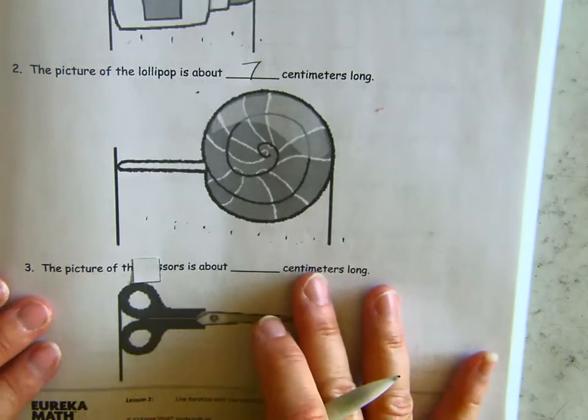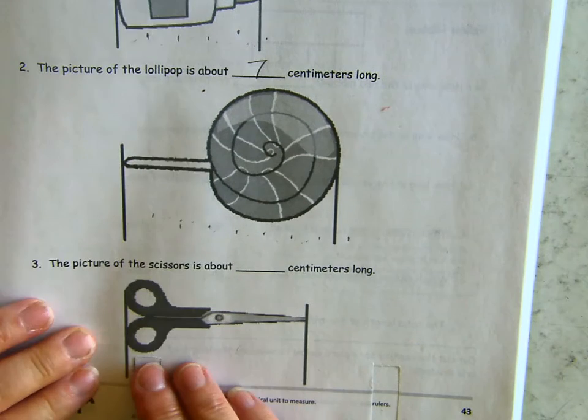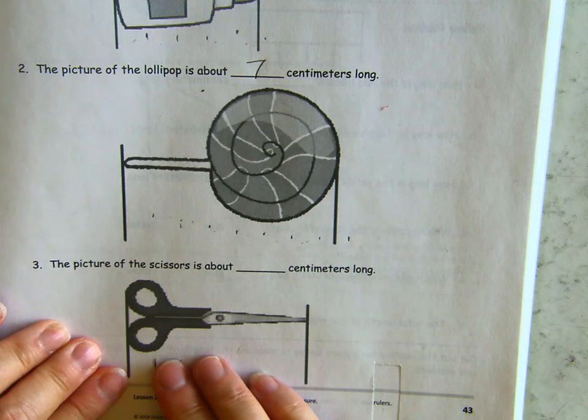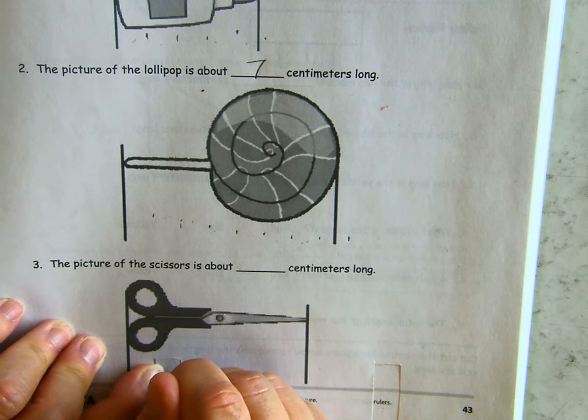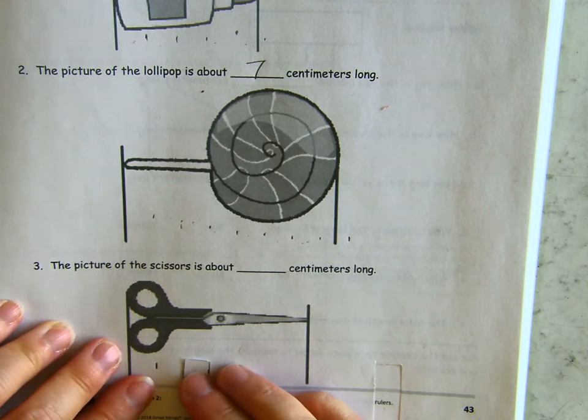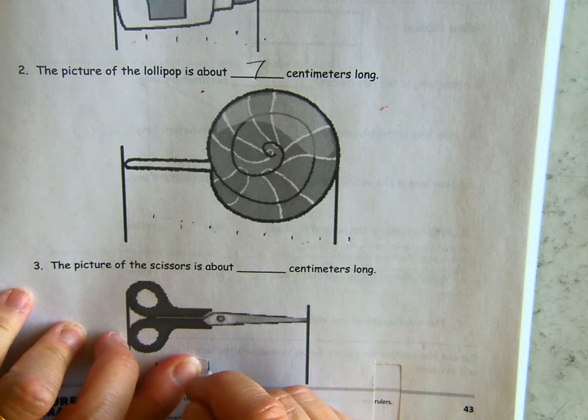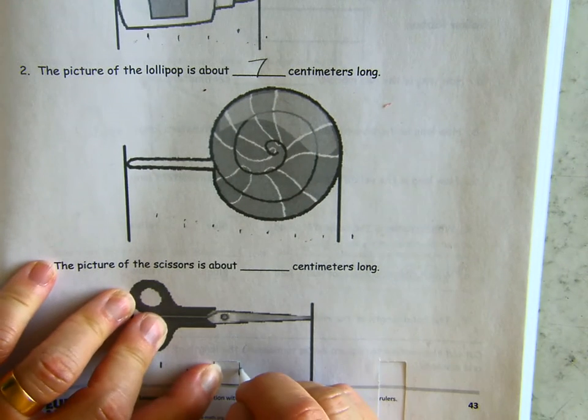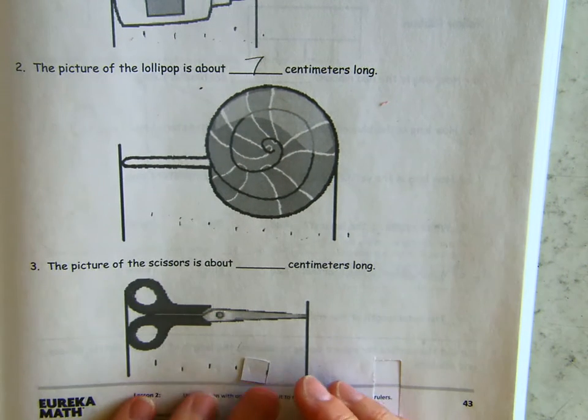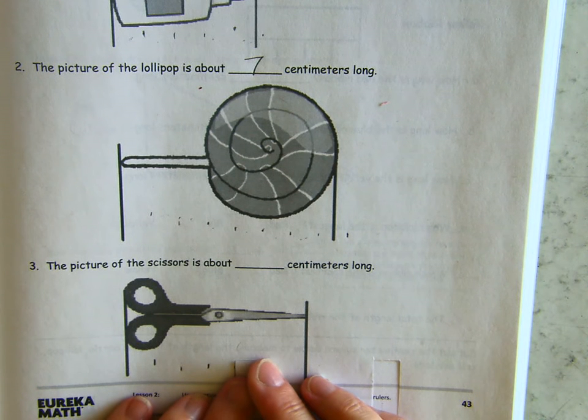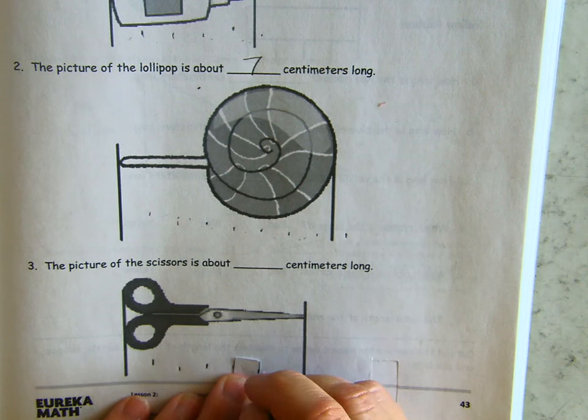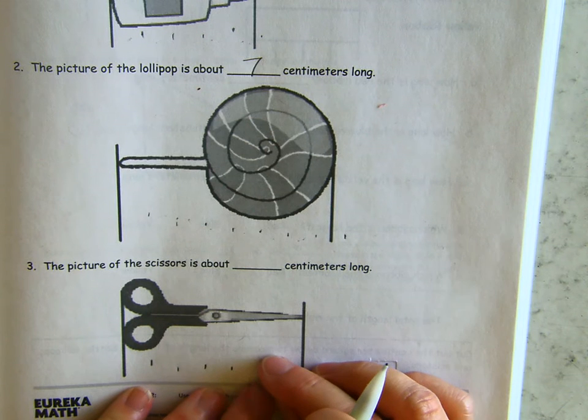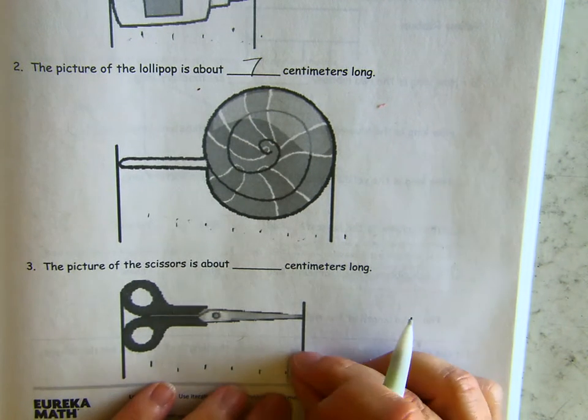So, we have one more on this page. We're going to measure the scissors. Same thing. Cover up and we mark it. Cover that mark. And again, we just keep covering up the last mark. It's a very small thing to hold on to. So, you might have a little trouble keeping it in place. But you got to hold it in place or you can't mark the next part. And the last one.